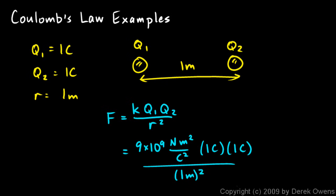You can see the units cancel out. Both of these Coulombs cancel out with the Coulomb squared, and this meter squared up here cancels out with this meters squared there. You're left with nine times ten to the ninth Newtons.